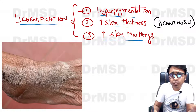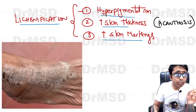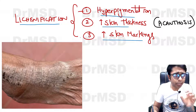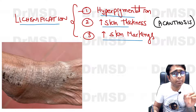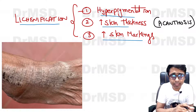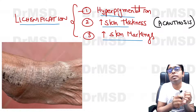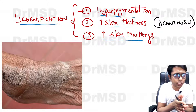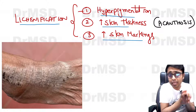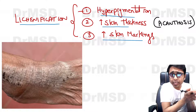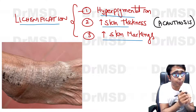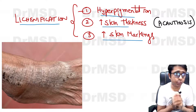In the acute phase of eczema — that is, dermatitis — the skin changes are mainly erythematous lesions, along with oozing and vesicular lesions. The histopathology of acute eczema is going to show spongiosis.